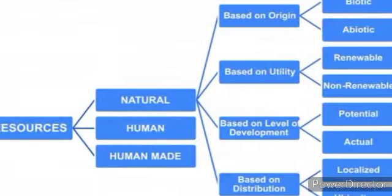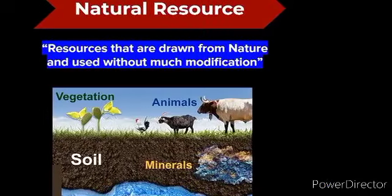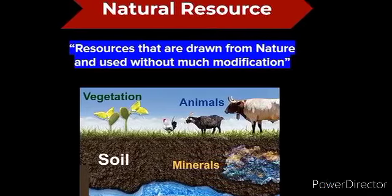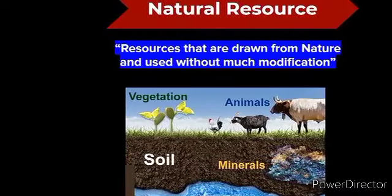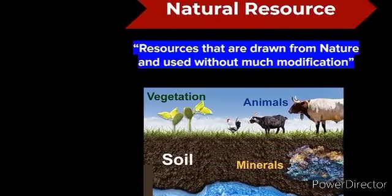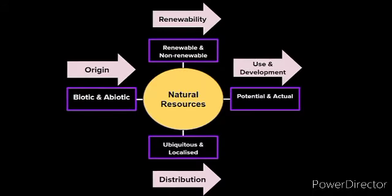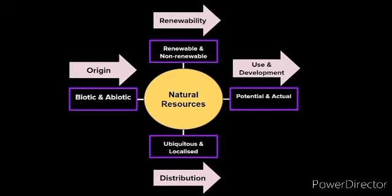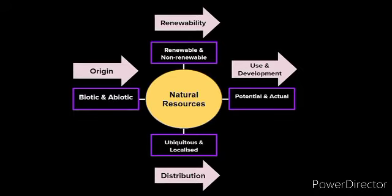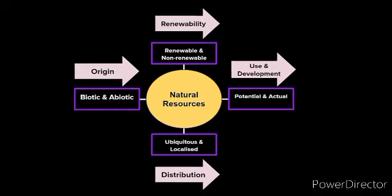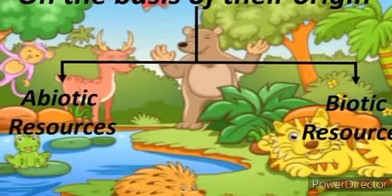Natural resources are those resources that are drawn from nature without any value addition or modification — for example, plants, animals, minerals. Natural resources are further classified into four broad categories: on the basis of origin, use and development, durability, and distribution.